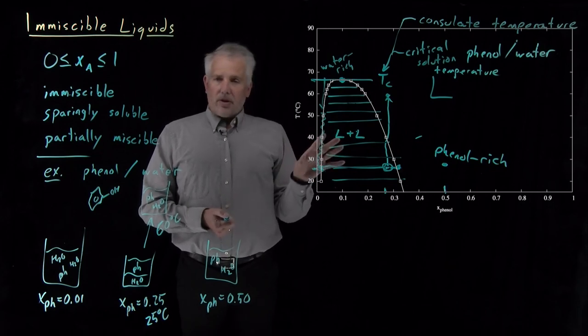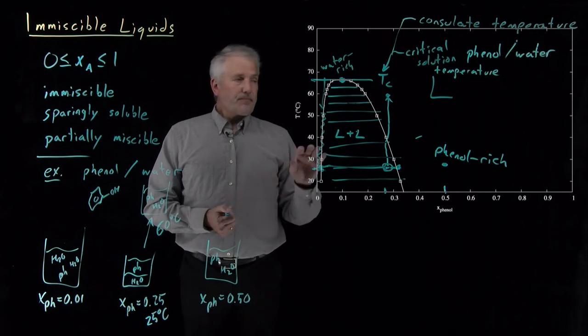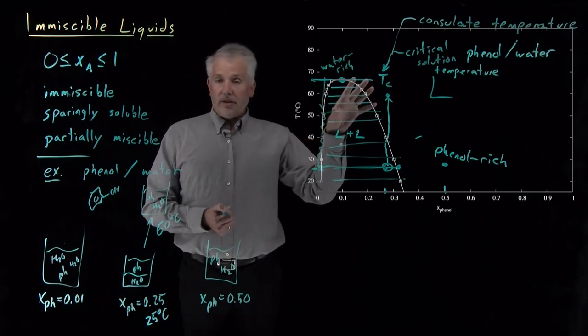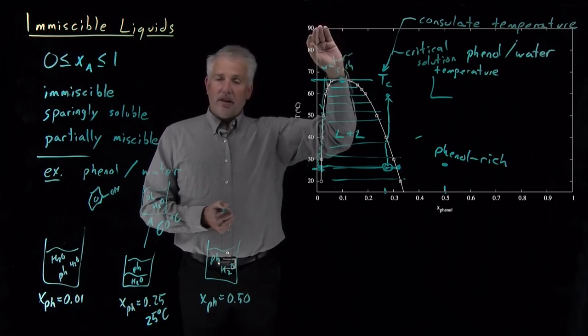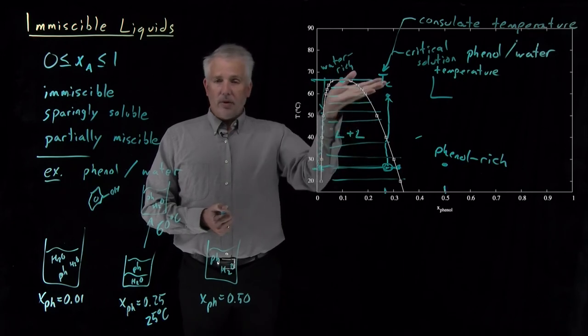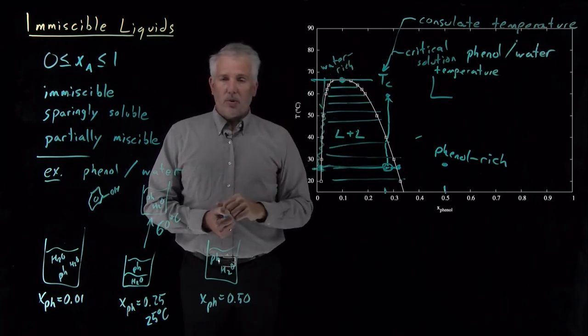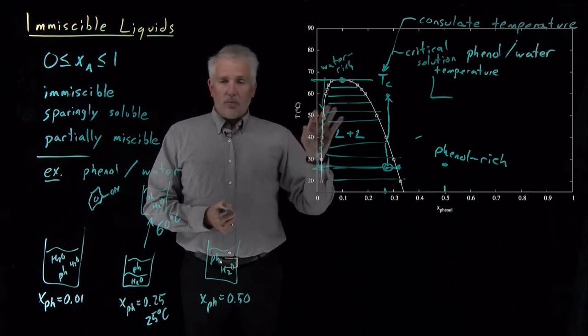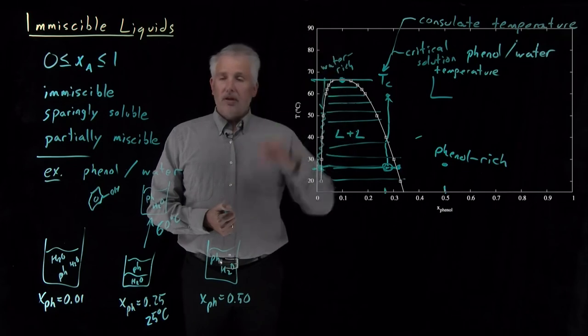So it may have occurred to you that on this liquid phase diagram, we don't have evidence of gas anywhere, and I've cut the graph off below the temperature at which the solution would boil. But of course, if we continue heating these liquids up to the point where either phenol or water would boil, or their solutions would boil, then we're going to see liquid-vapor coexistence as well.